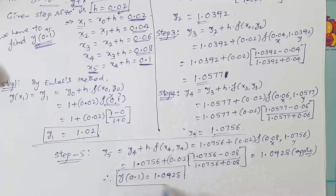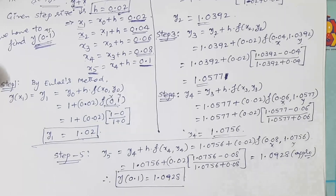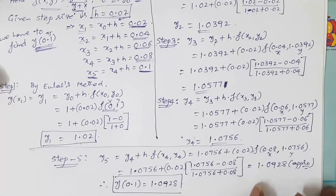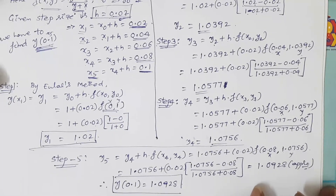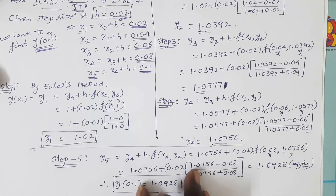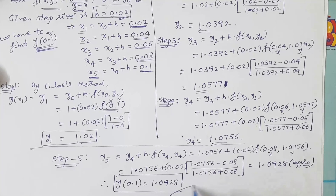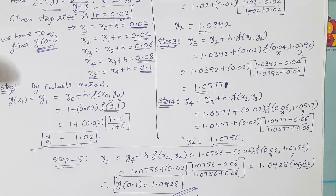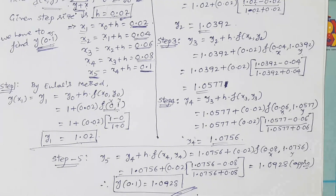This is the way to solve the given initial value problem using Euler's method. Please remember: if we increase the number of steps — that is, minimize the h value — you will get a more accurate result. That is the important thing. In the next video I will give another example. Thank you very much.